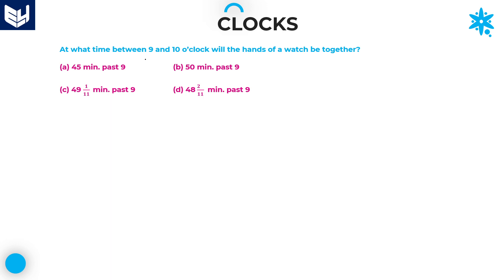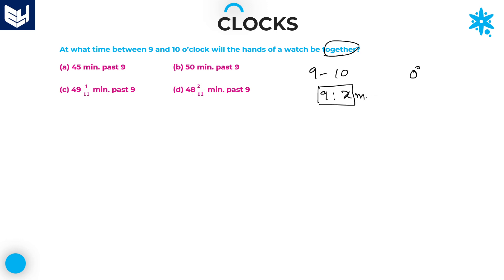Next question: at what time between 9 and 10 o'clock will the hands of a watch be together? 'Together' means the angle between them is 0 degrees. Let the time be 9 hours x minutes — that is the time at which the hands coincide.